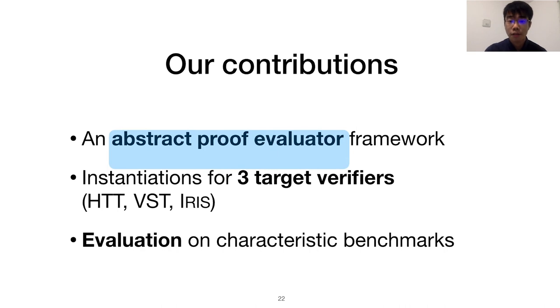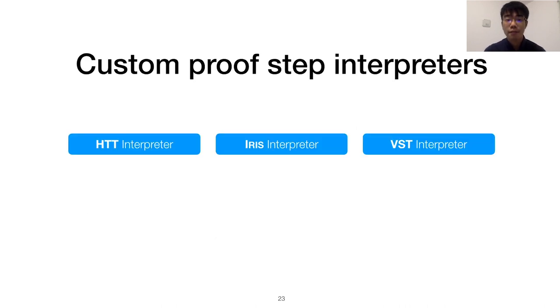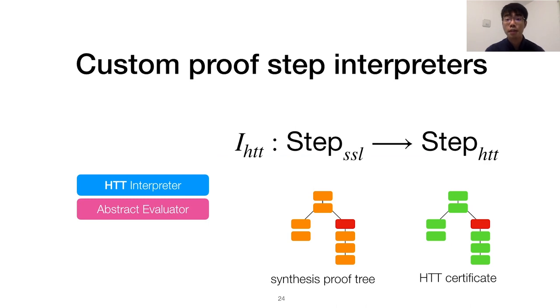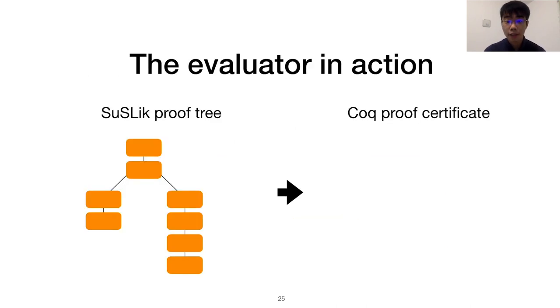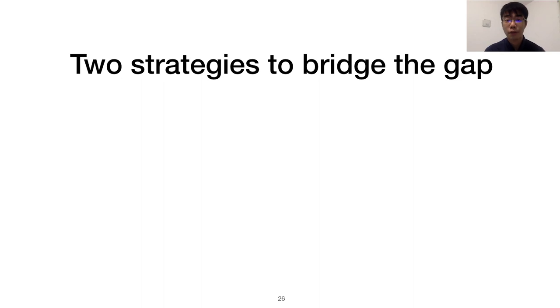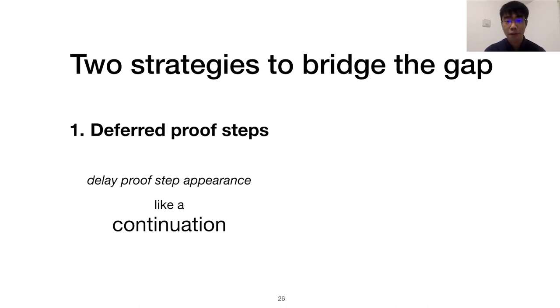Let's see how this abstract evaluator works. We can instantiate the evaluator for a target verifier by providing a custom proof step interpreter, which maps an SSL rule application in the synthesis proof tree to a corresponding step in proof certificate. After synthesis, an instantiated evaluator traverses a proof tree encoding of the successful derivations and invokes the interpreter at each node to build the certificate. Now, I'll explain two strategies the evaluator uses to bridge the gap we observed earlier. First, we have deferred proof steps, the ability to delay the appearance of a proof step beyond when it's first interpreted. Intuitively, it behaves like a continuation in functional programming. Second, we have proof contexts, which let the interpreter store and later retrieve bookkeeping information throughout the traversal. The functional programming analog would be an accumulator.